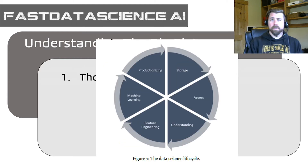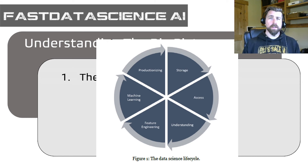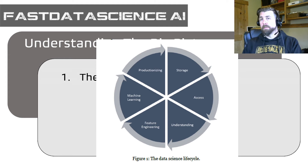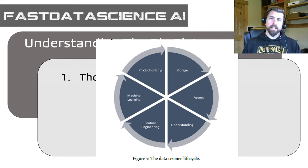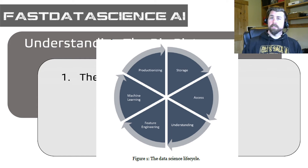In my book I present a graphic that provides a framework for thinking about the different steps a data scientist would go through on a typical data science project. This is typical for most enterprises and especially small and medium businesses. Even if there are specialized roles like data engineers, data scientists should have some understanding of the skills required for each step — at minimum, knowing how to ask the right questions and have informed conversations with team members. I break it out into six different steps.